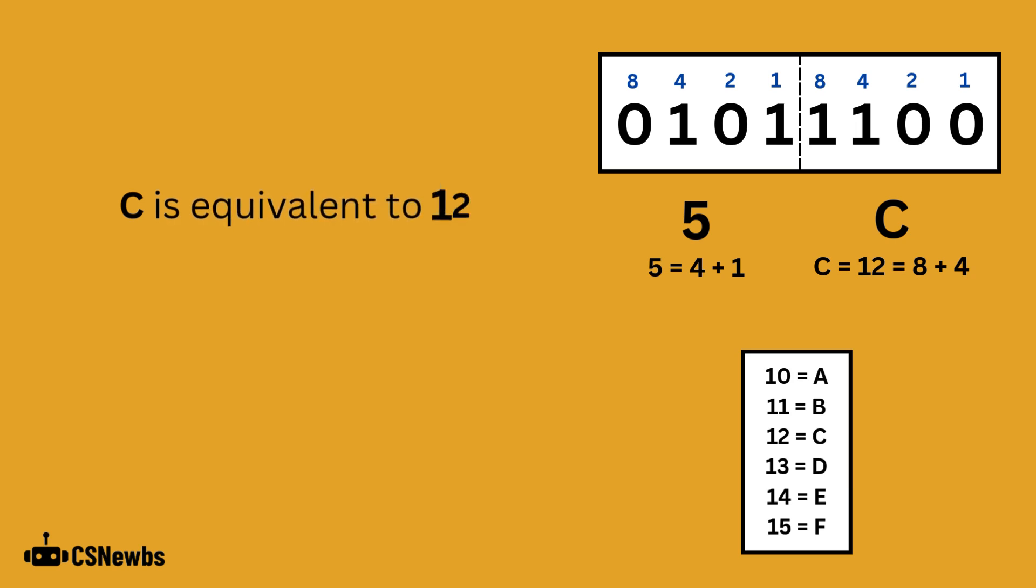C is equivalent to 12. 12 is made by adding 8 and 4. Write a 1 below those place values and a 0 below any of the other place values which have not been used.